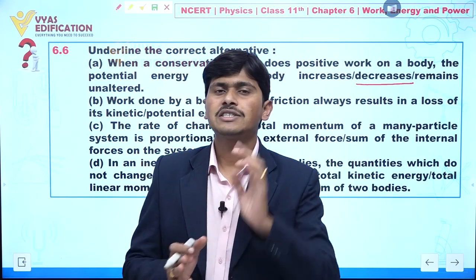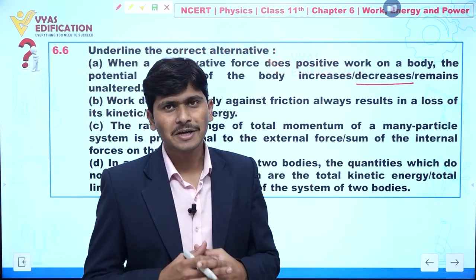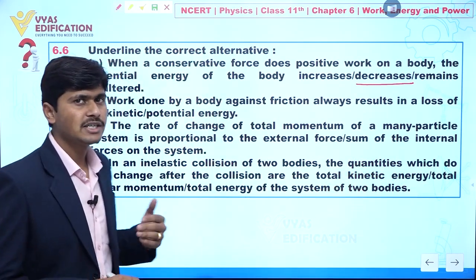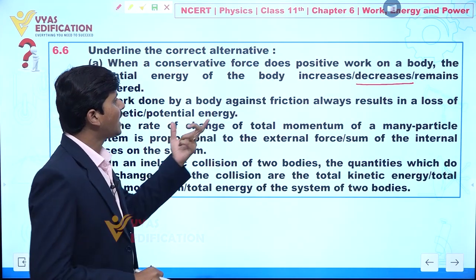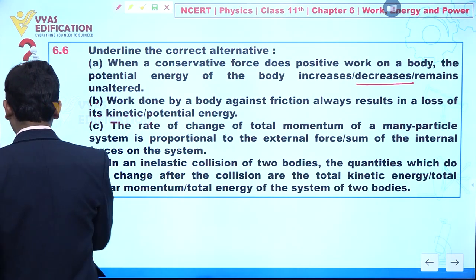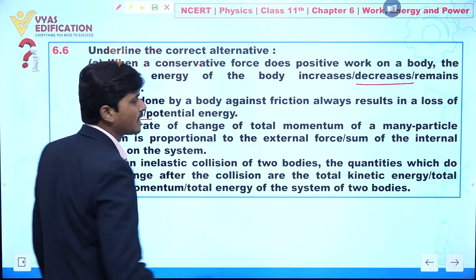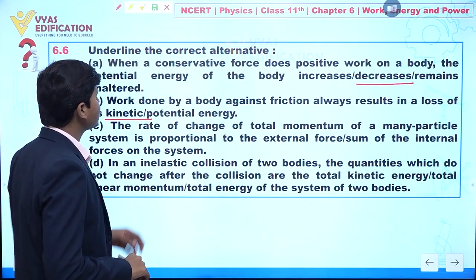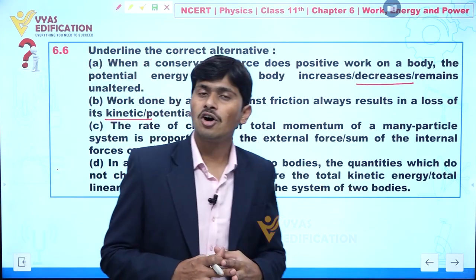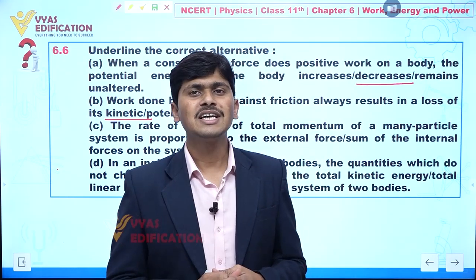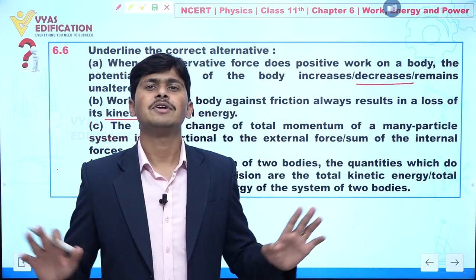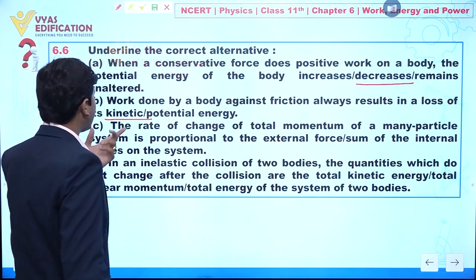Friction is a non-conservative force, and whenever a non-conservative force acts on a body, there is some loss of energy — specifically, kinetic energy always decreases. So work done by a body against friction always results in a loss of kinetic energy. Always keep in mind: we define potential energy for conservative forces only. Whenever non-conservative forces are acting on a body, potential energy does not come into the picture. So the correct answer here is: loss in kinetic energy.